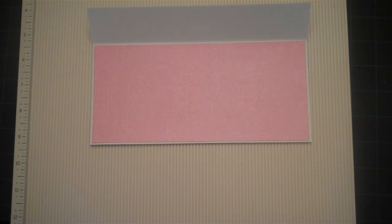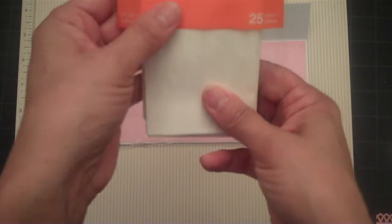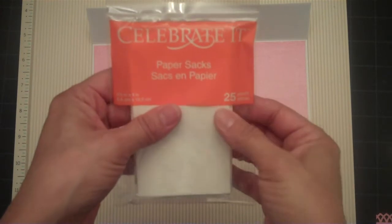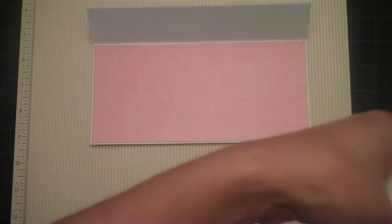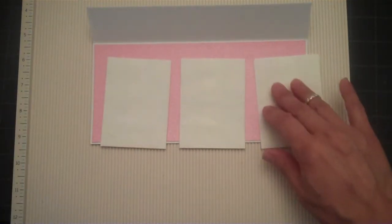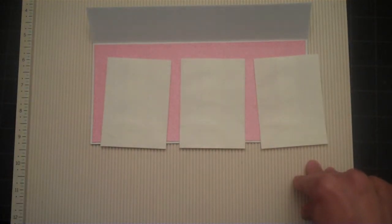Now the way I made my pockets, I purchased these little paper sacks at Michael's. You get 25 and I think they were $2.50.